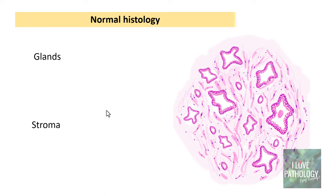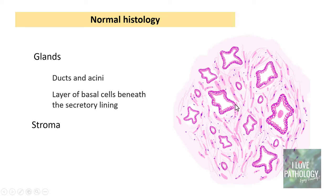The prostate is formed by glands and stroma. Glands consist of acini and ducts, each lined by bilayered epithelium — the outer cuboidal and inner columnar secretory lining. The stroma is fibromuscular, and you also find concentric laminations known as corpora amylacea.